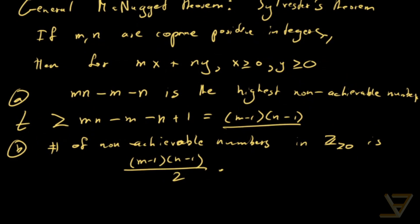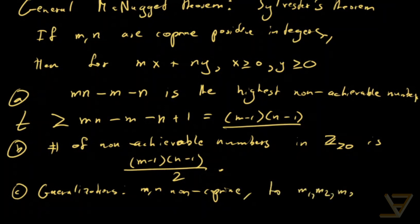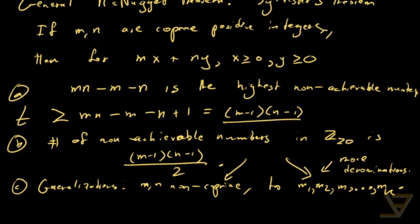And the last thing that I want to mention is that there are two possible generalizations to M, N non-co-prime and to M1, M2, M3, and so on, all the way through Mk. So more than just two denominations. So this is more denominations. And there are theorems for this. For this particular one, the second one, there's no exact theorem. For the first one, there is a theorem. It's called Schur's theorem. But both are a bit too involved for us to get into right now.